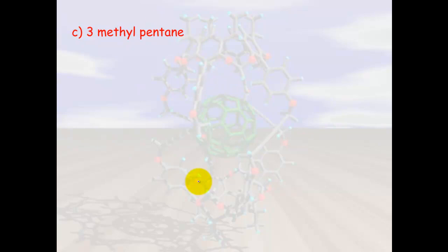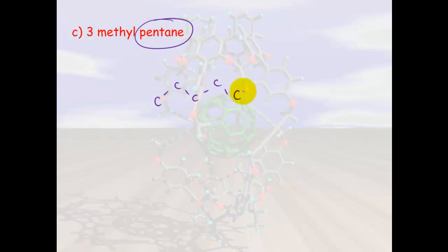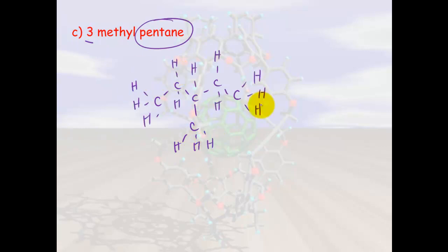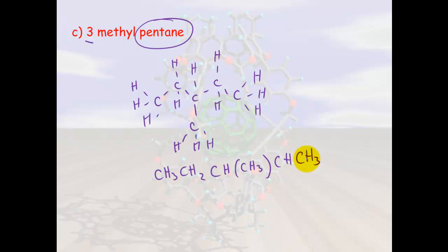For 3-methylpentane, start by drawing the longest carbon chain: one, two, three, four, five carbons, with a methyl group on carbon three. Draw in all the hydrogens — at this stage it's a good idea to check that every carbon has four bonds and every hydrogen has one bond. Then write the semi-structural formula and molecular formula.